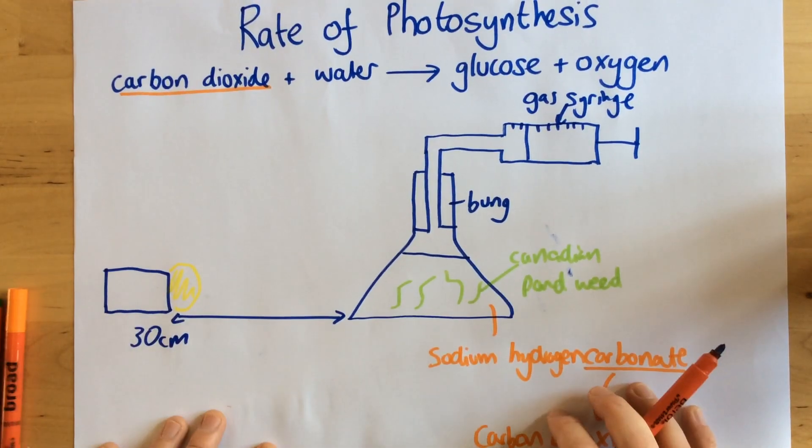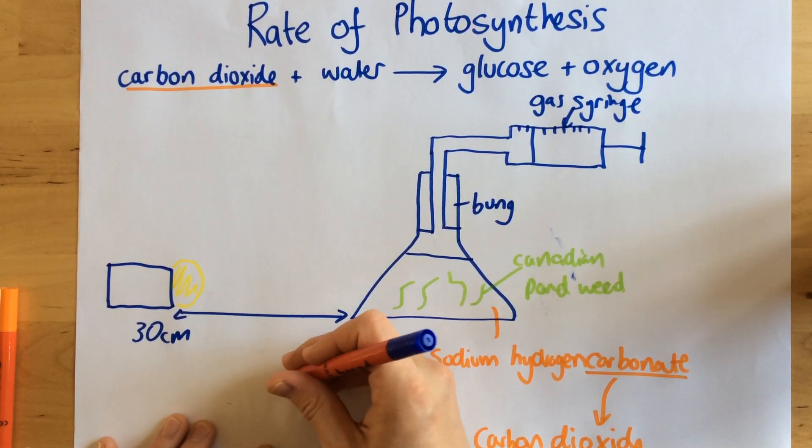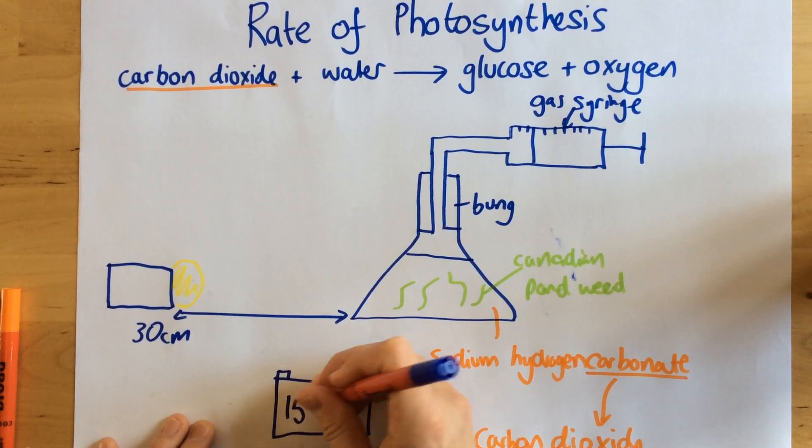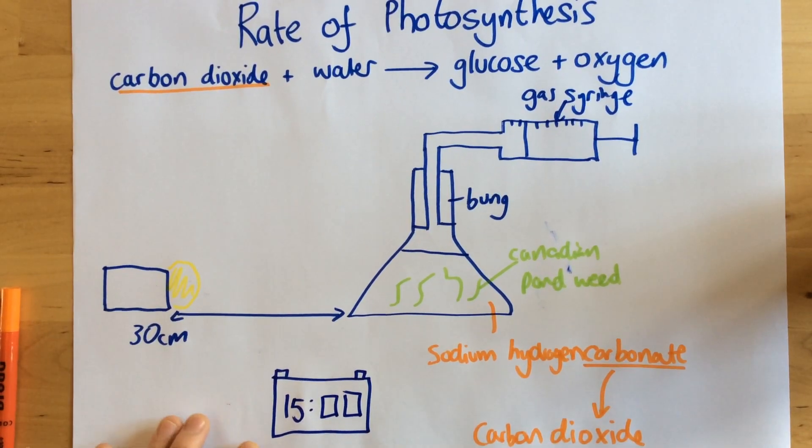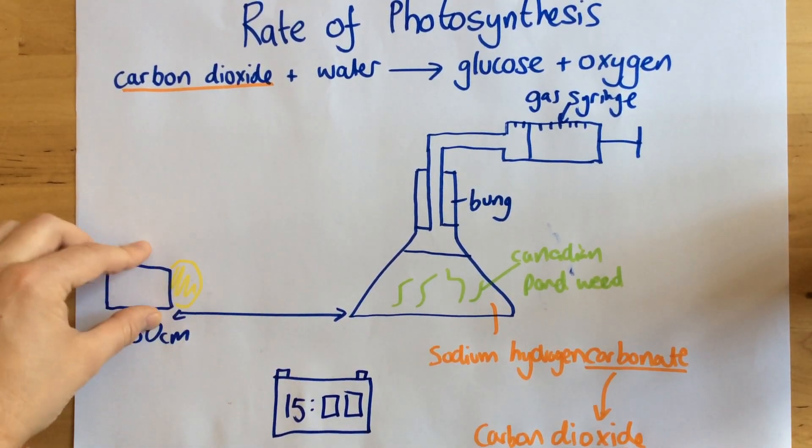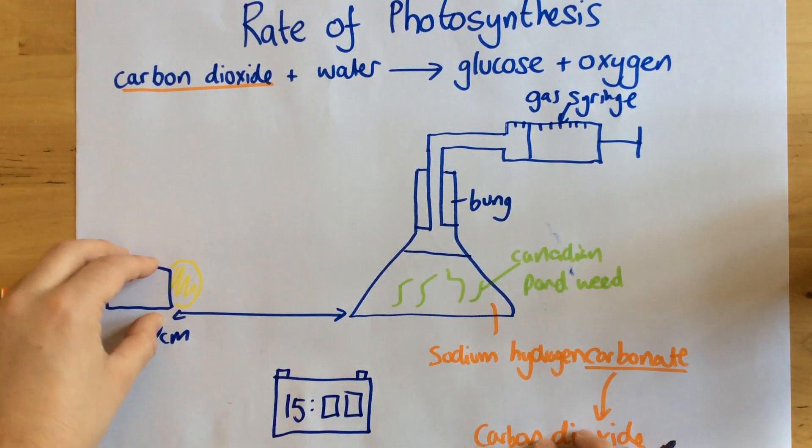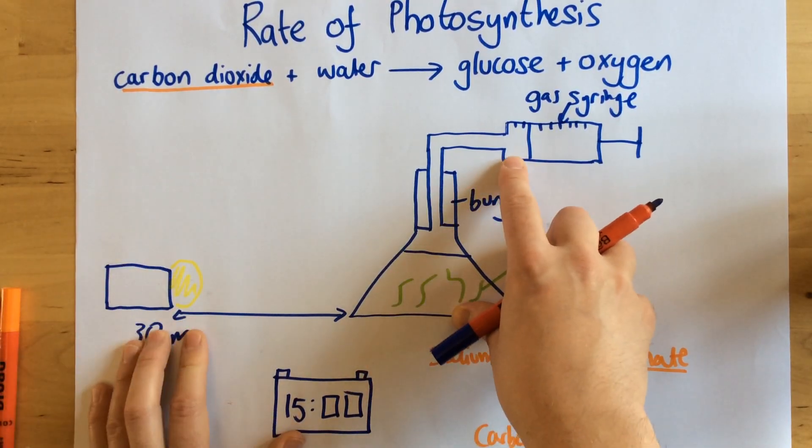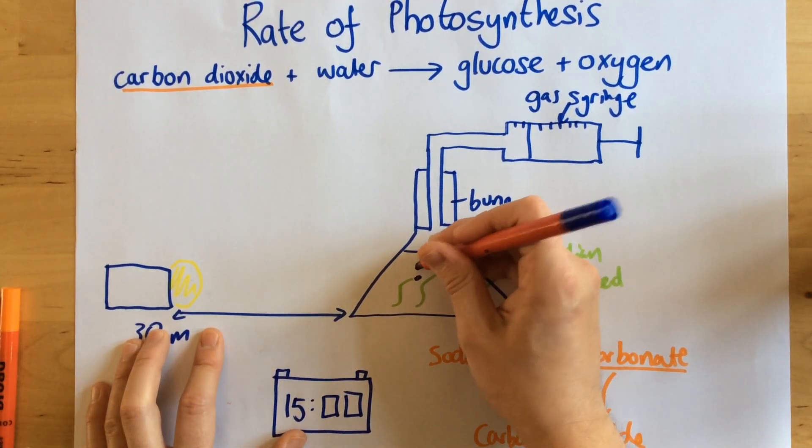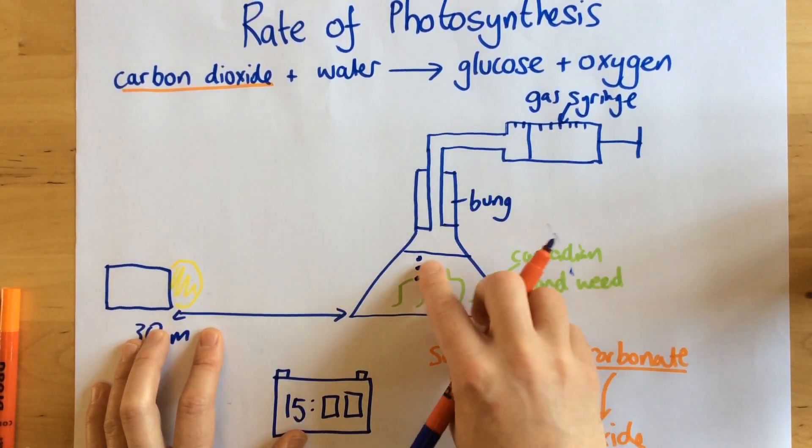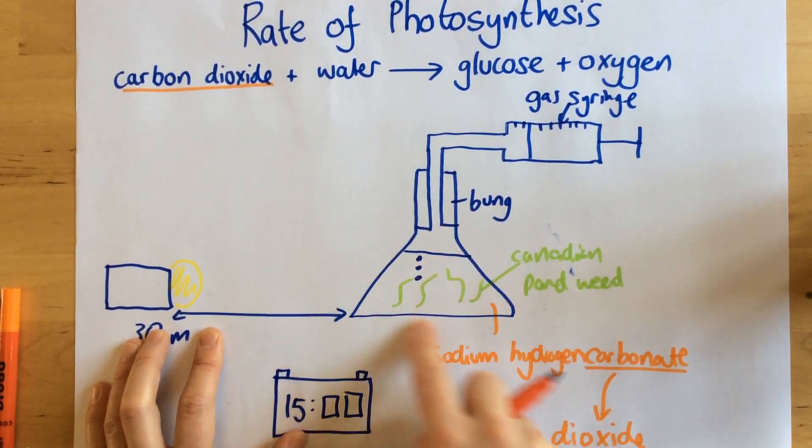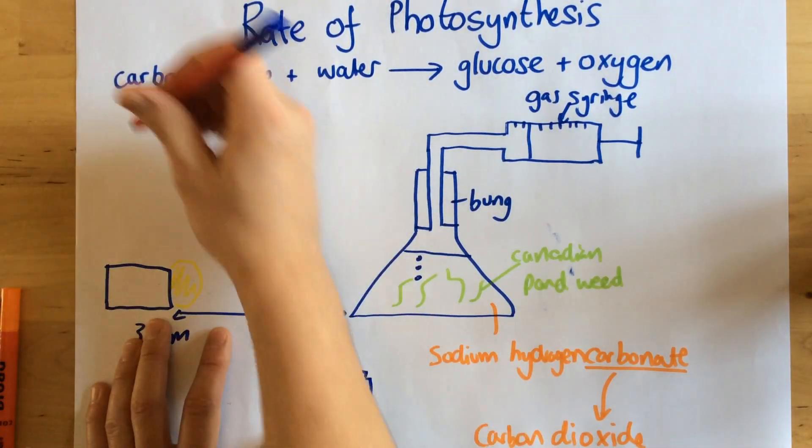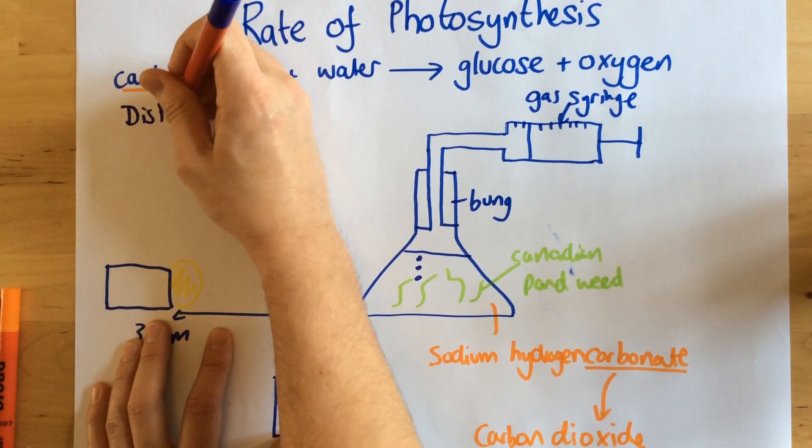So this is what we do. We have a stop clock right here as well, and let's say I'm going to time it for 15 minutes. So what I do is this. I leave the lamp here, I allow it to acclimatize, then I start my stop clock. I then see how much oxygen is collecting in the gas syringe. So as the pondweed photosynthesizes, it releases oxygen. That oxygen goes up here and collects here.